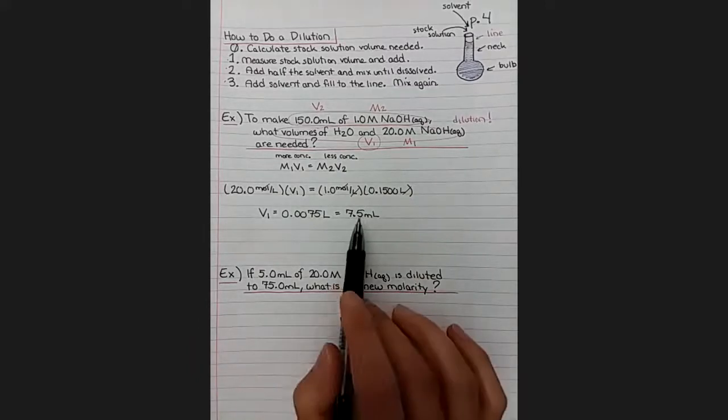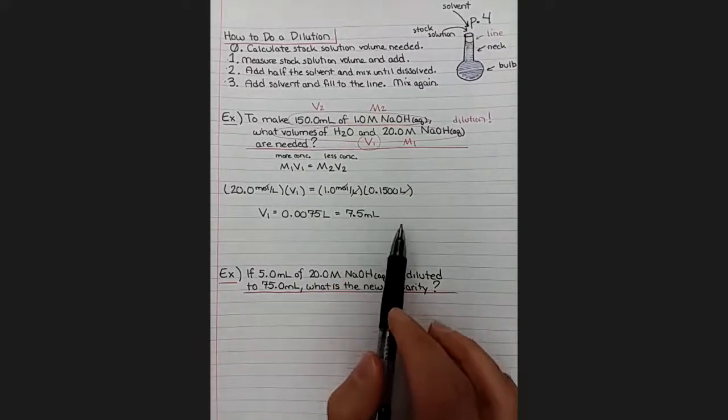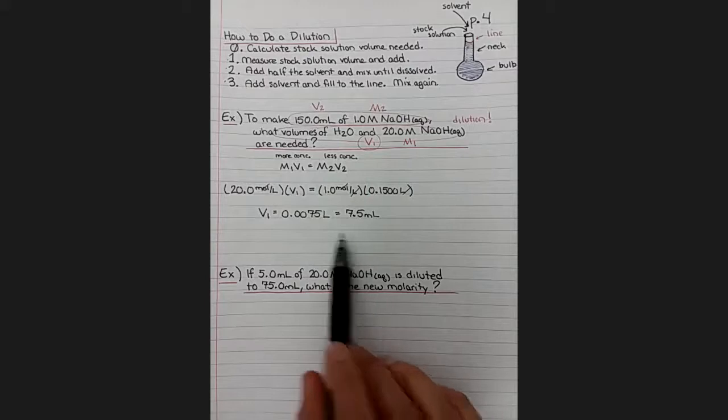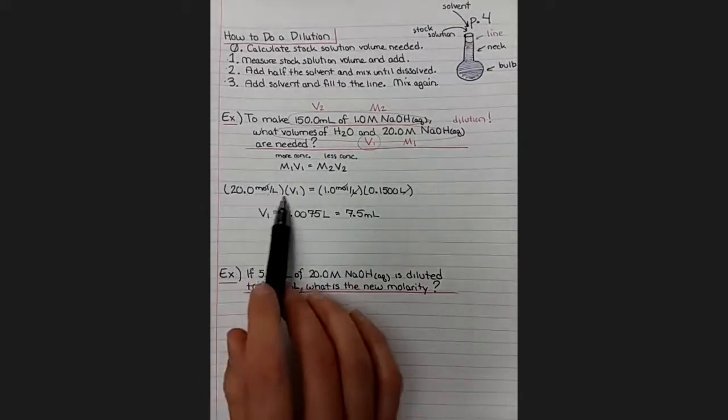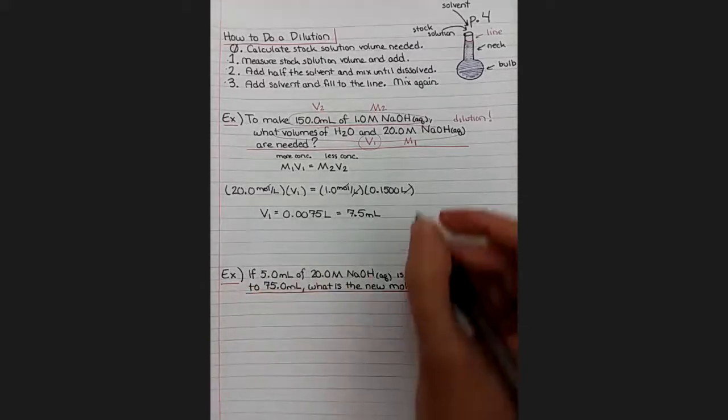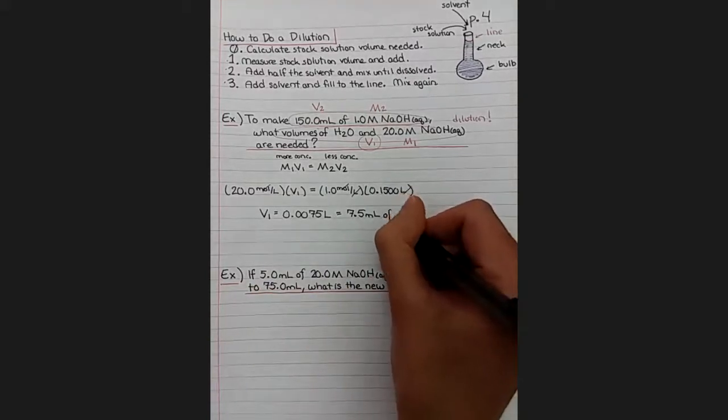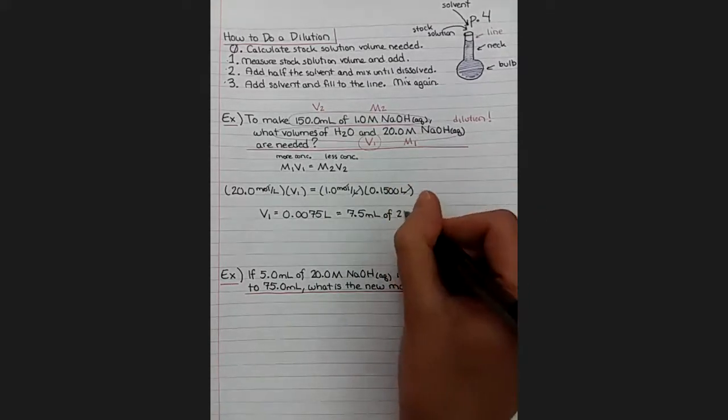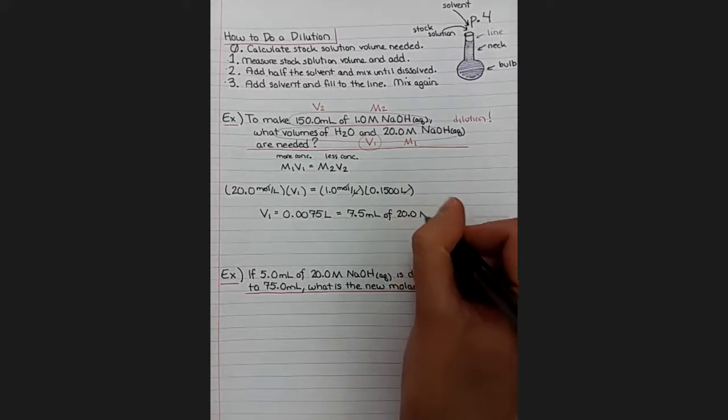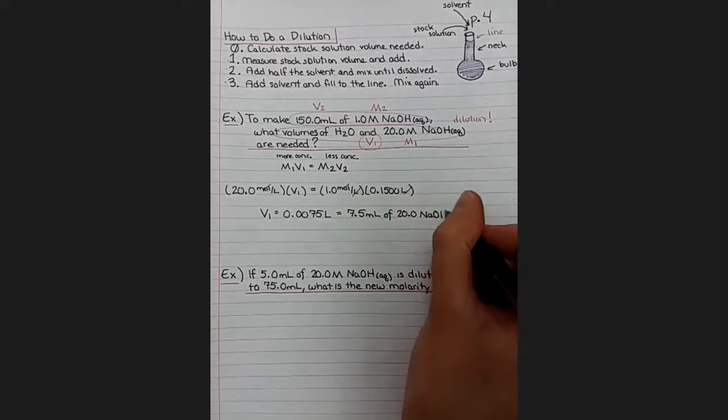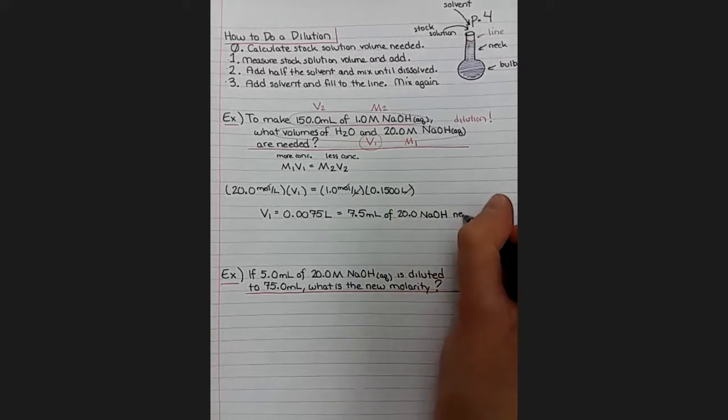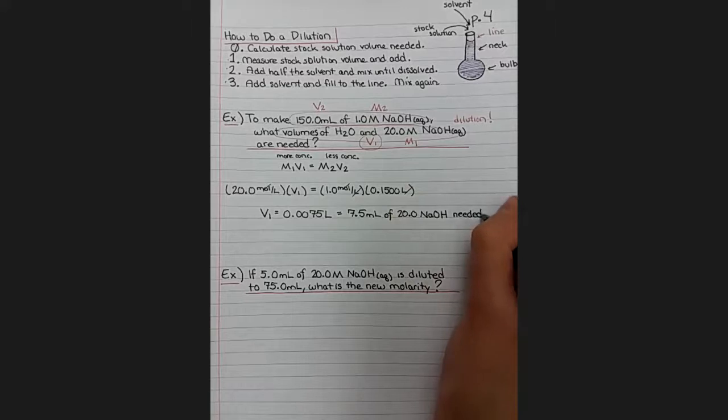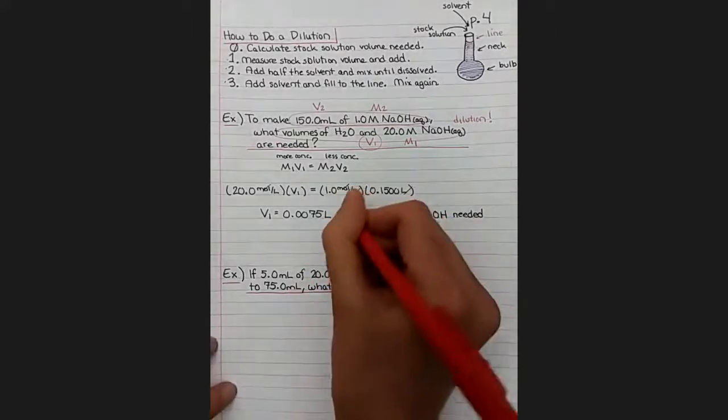And again, it's more useful here to include the number of the unit and the name of the compound. So when we do the dilution, this side, the left side, the first side is the stock solution, which is our more concentrated one. So we need to take 7.5 milliliters out of our super concentrated 20 molar stock solution. And that's how we're going to start a dilution. So we need 7.5 milliliters of stock for that process.